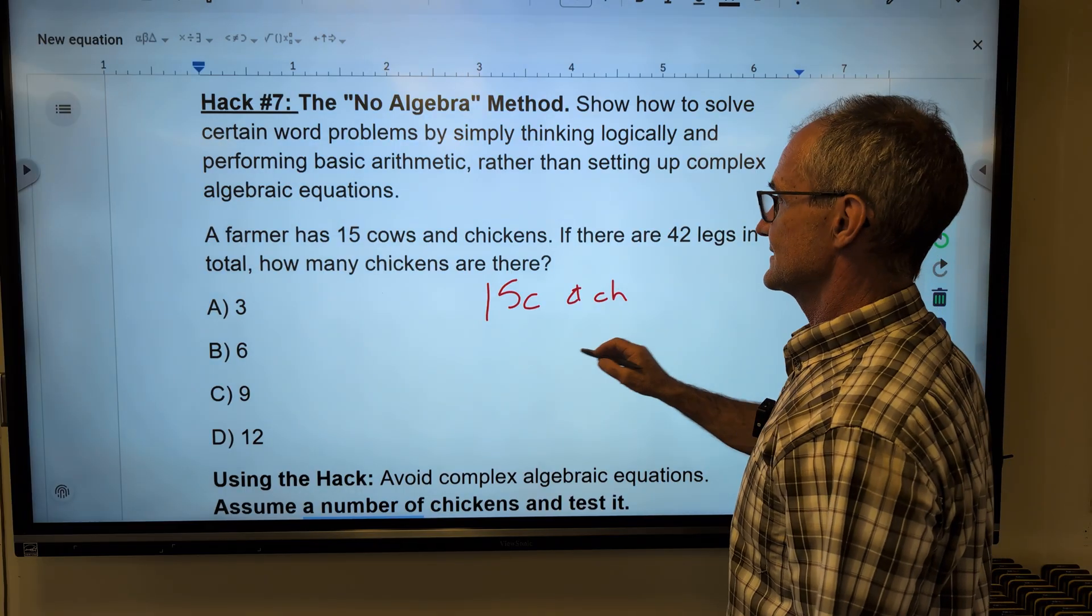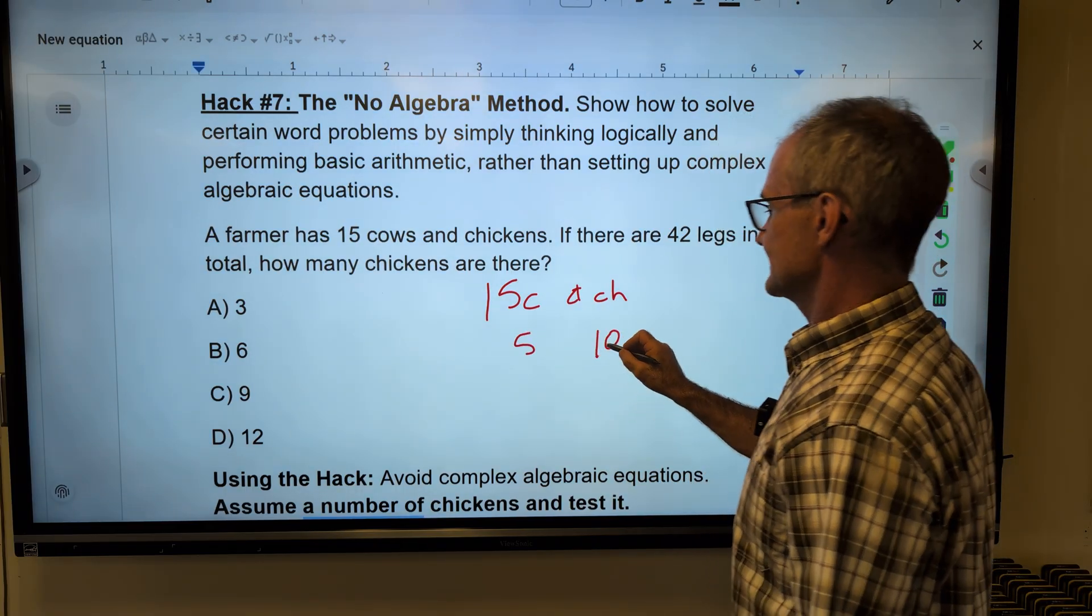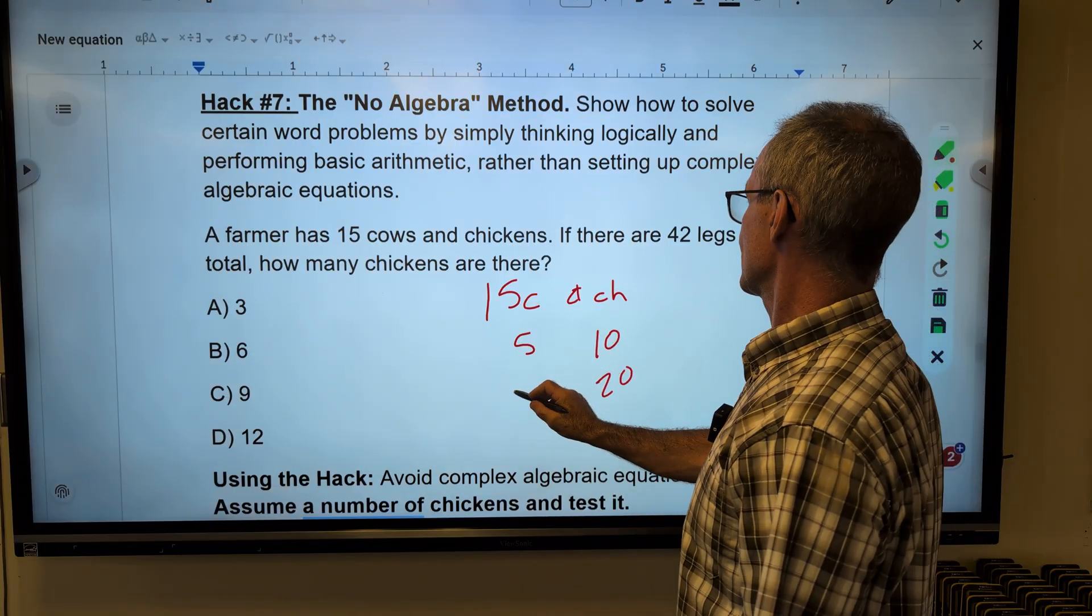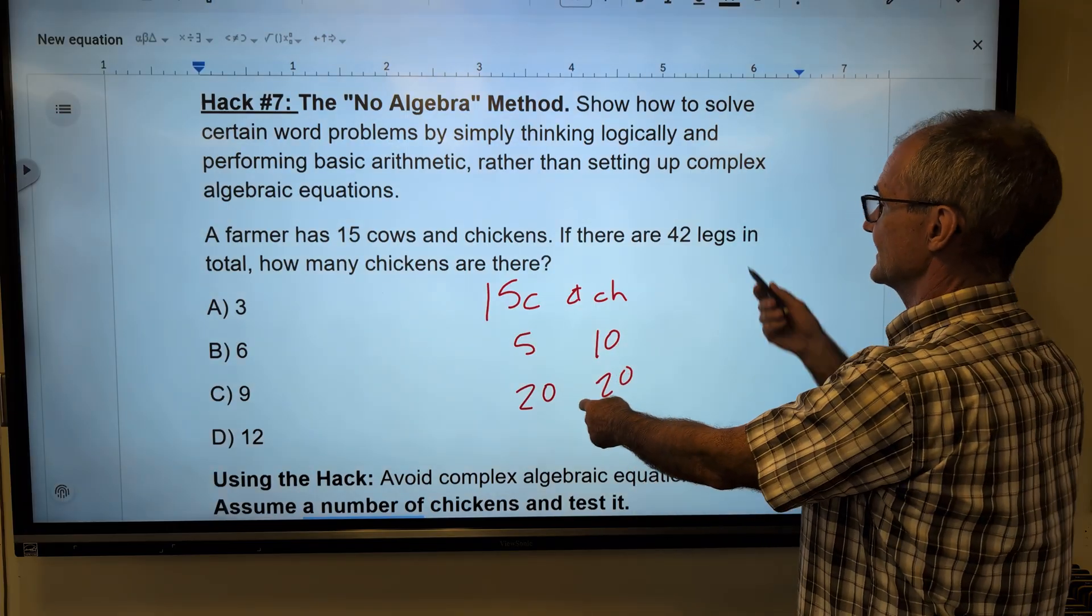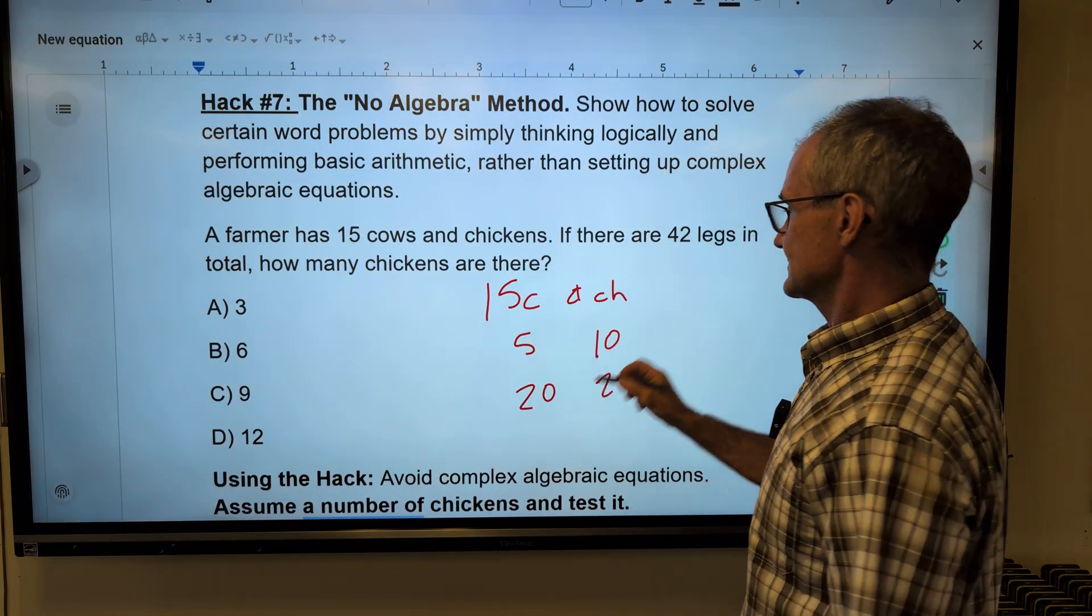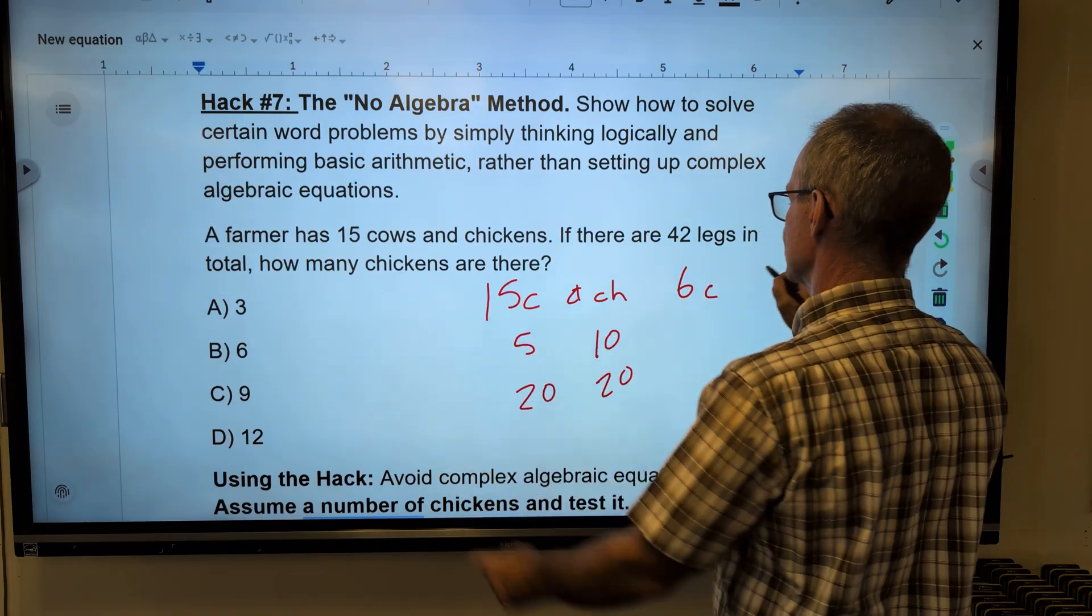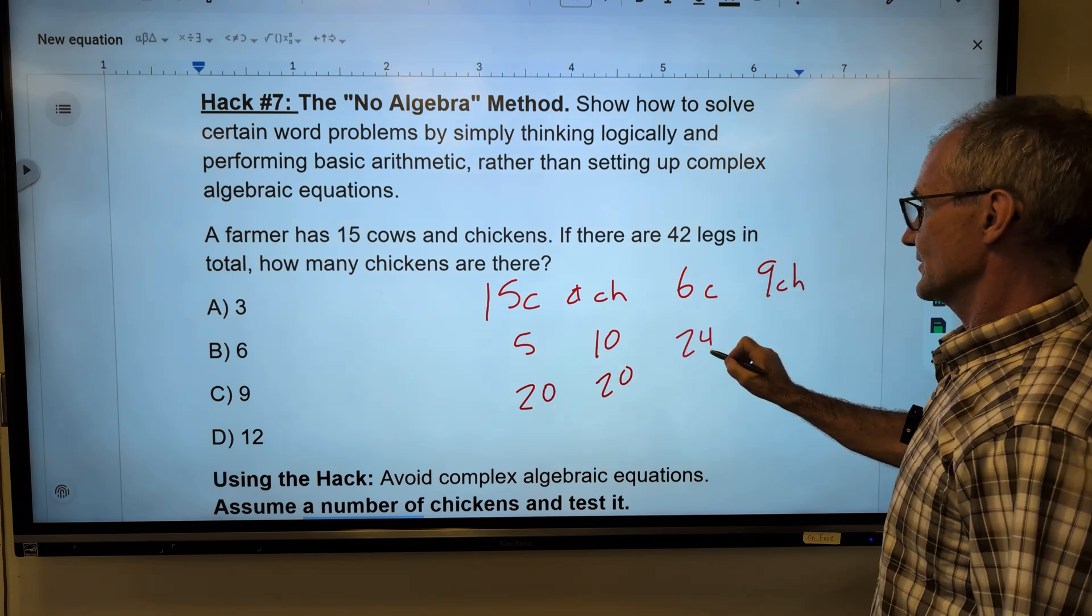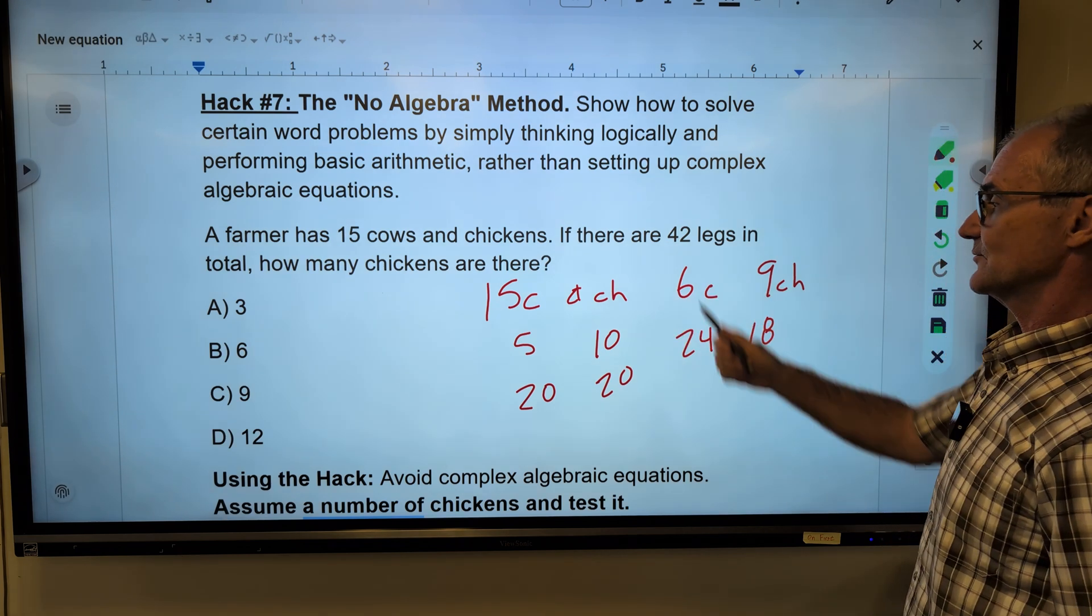If I had ten chickens, that means I would have five cows. Ten times two would be twenty. Five times four would be twenty. So I picked ten chickens. I'm not going to add up to forty-two. So that means I need one more cow. So let's try six cows. Six cows, nine chickens. Six times four, twenty-four. Nine times two, eighteen. Added together, it'll give me the forty-two legs.